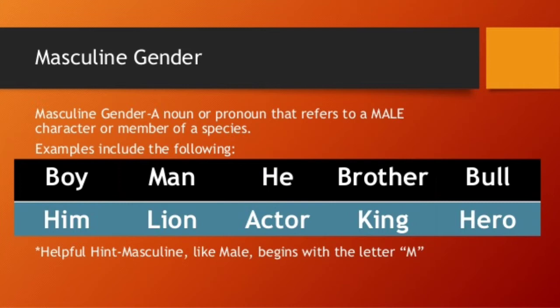Hero — we have role models as heroes in our lives, so they represent a male quality. For example, a dog: when we see a dog we recognize it as masculine gender. Masculine gender means the male character or member of a species. The helpful hint: 'M' represents masculine.